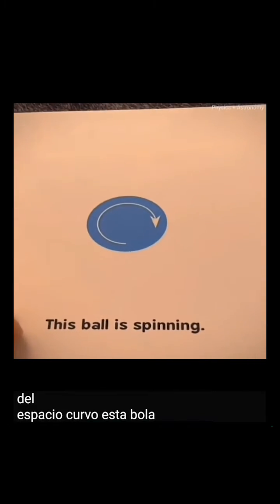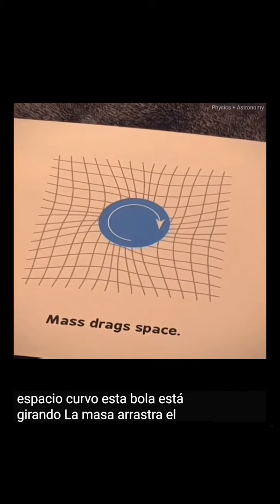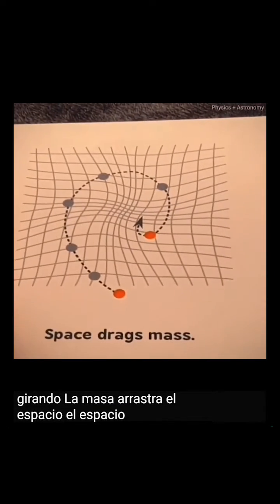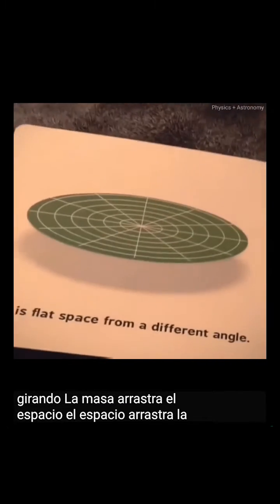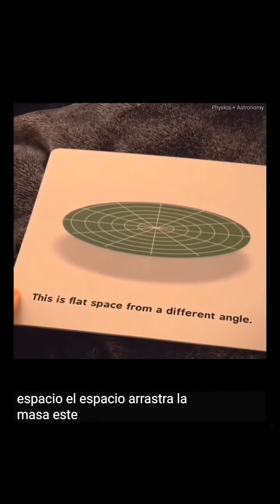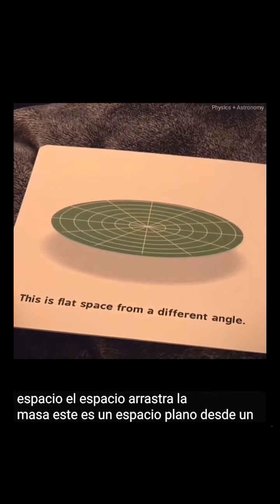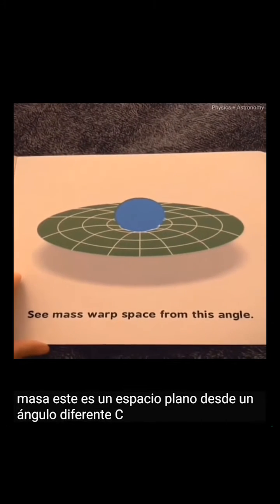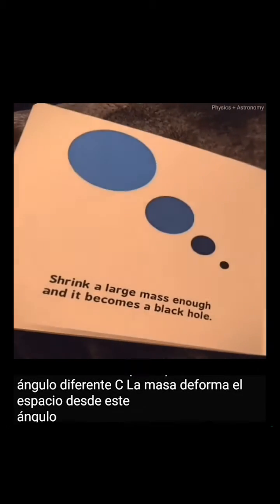This ball is spinning. Mass drags space. Space drags mass. This is flat space from a different angle. Mass warp space from this angle.